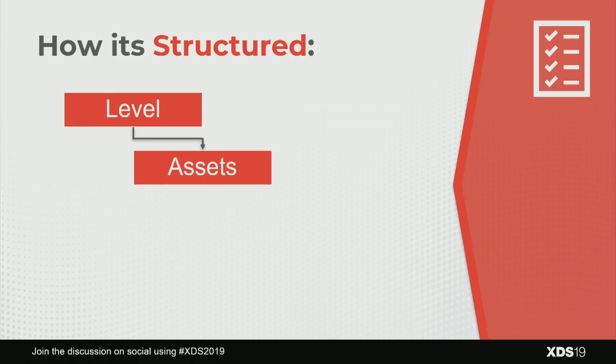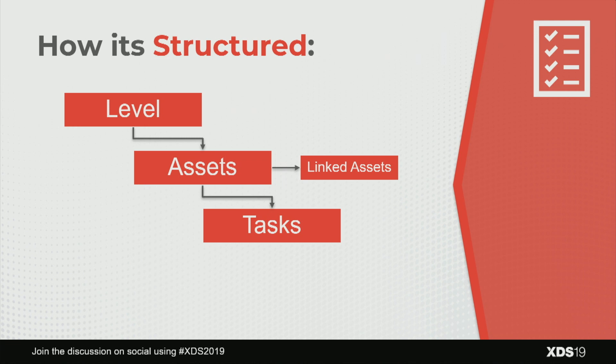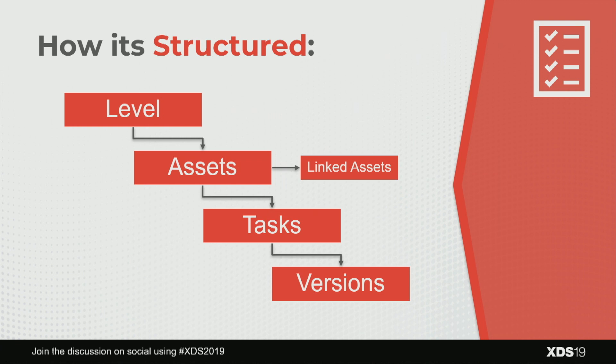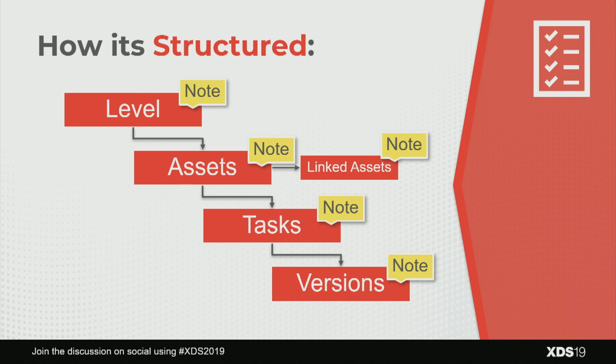Shotgun came from a film background so there are other ways to set it up, but in game dev, the level is the top entity. Under that you have the assets you're building. You can link assets together if they're related. Under that are the actual tasks — high poly, low poly, and so on. Finally, there are versions — the art submitted for review and tracking. You can attach notes to all of these entities.